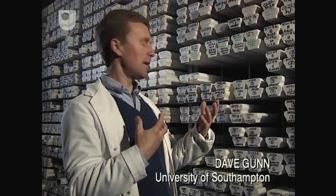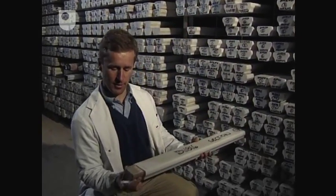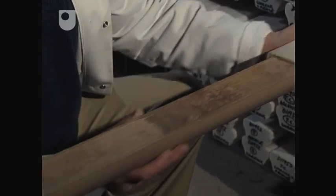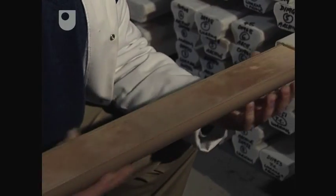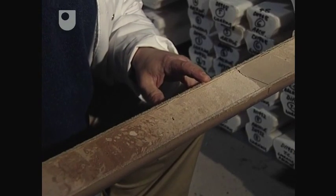Here's an example of a core that goes back some 100 to 200,000 years, and the sediments within this show clear differences visually which have been caused by differences in climate.